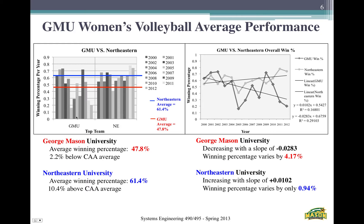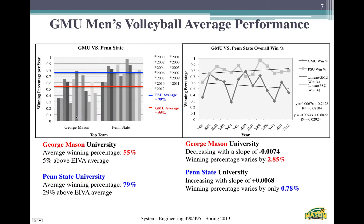This is the women's volleyball program, and we compare them to Northeastern. You can see in the graphs their winning average on the left and their variability on the right. They show a decreasing trend while Northeastern shows an increasing trend, with George Mason's winning percentage average being much less. For the men's, we compare them to Penn State, as Penn State and Northeastern are the best teams in their respective conferences — if we can beat them, we can beat any other team in our conference.